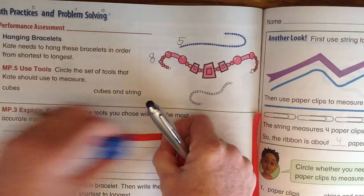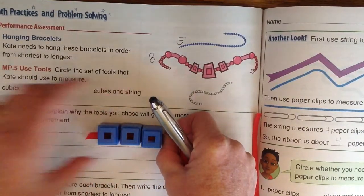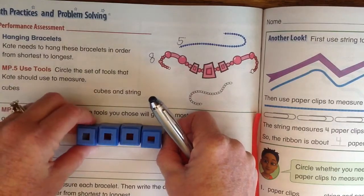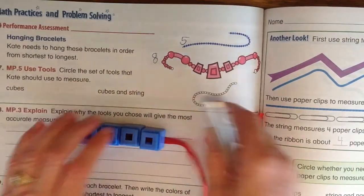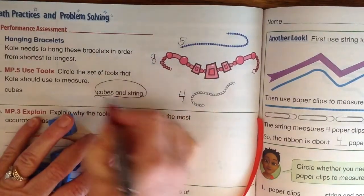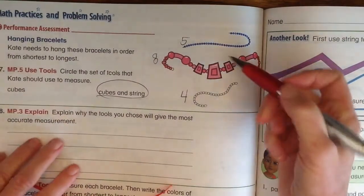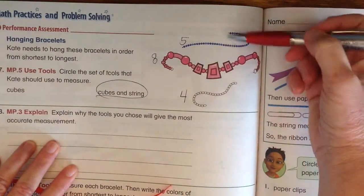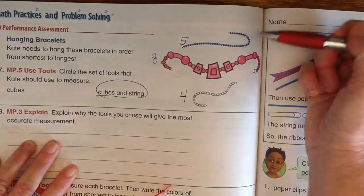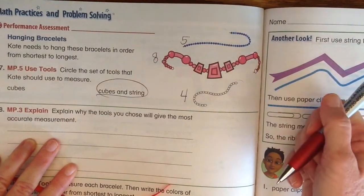So about right here, we have one, two, three, about four cubes long. So we had to use both the cubes and the string. And which one was longest? The pink one. Then the chain. And then the very bottom one was the smallest.